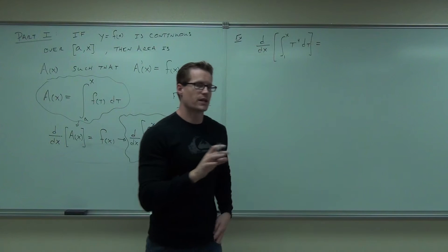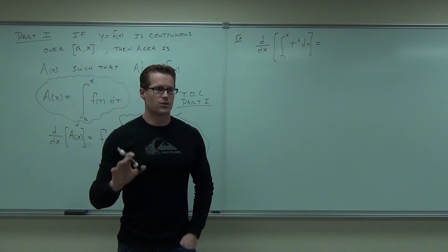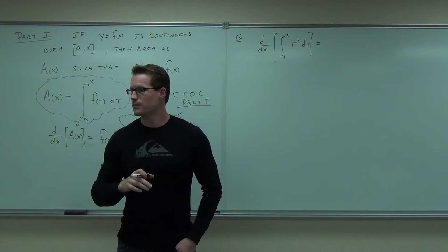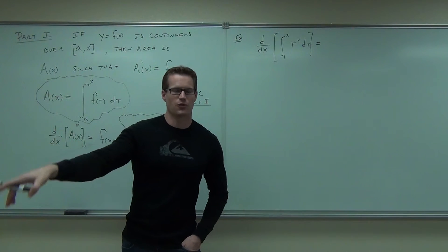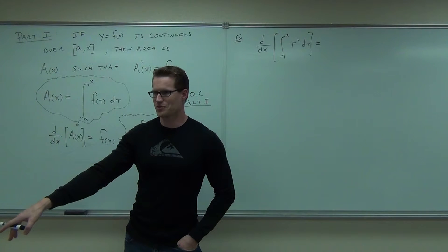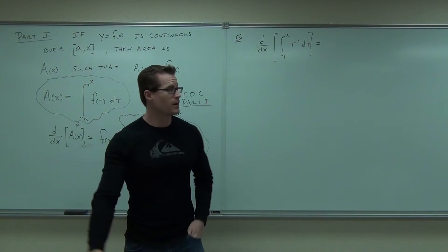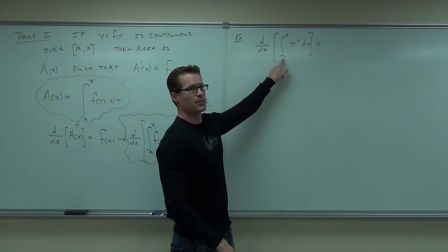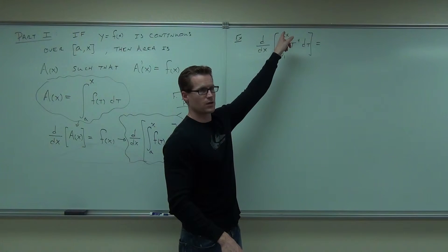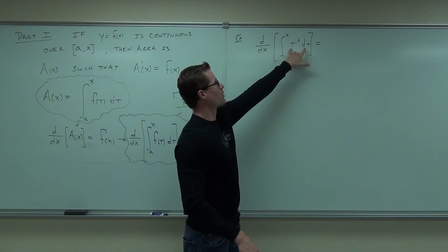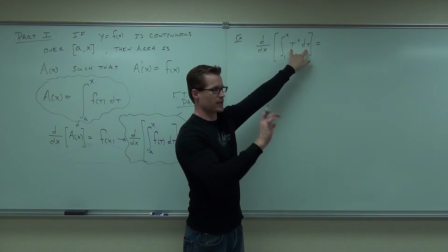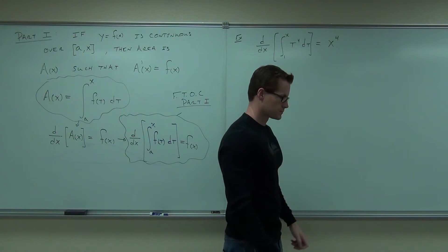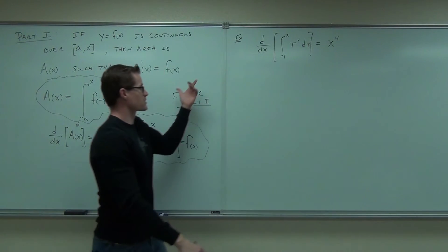Without doing any work, any work, you can tell me what this is. T to the fourth. Not T to the fourth. You're very close. X to the fourth. Without doing any work. Why? Well, because you have a derivative of an integral. The integral starts, I don't care, but it ends at X wherever it is. That means that this is going to be whatever our dummy variable is, but with an X instead. So this becomes X to the fourth. By this theorem.